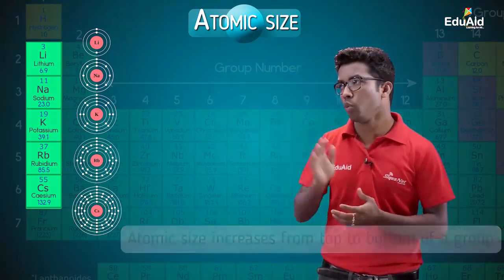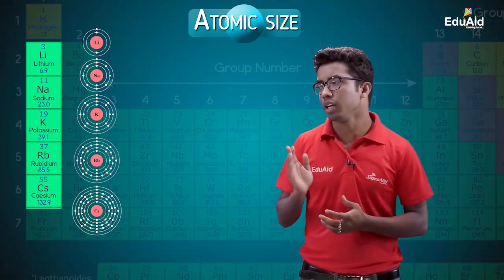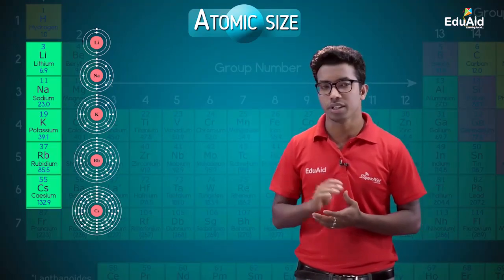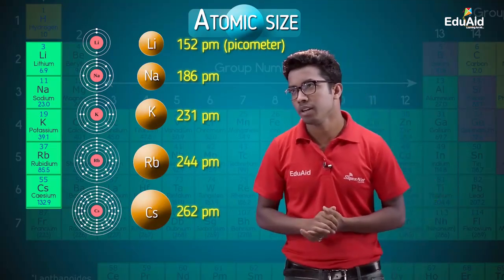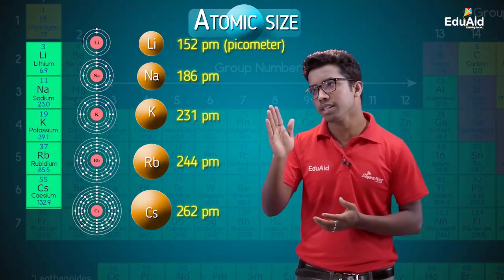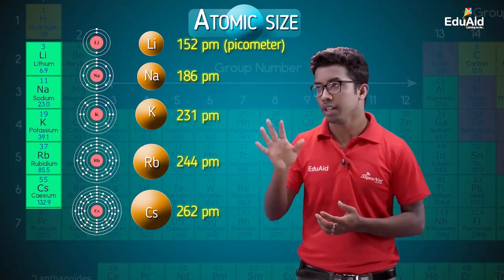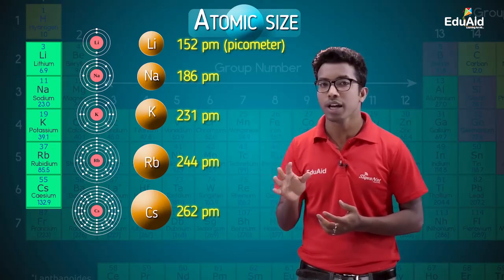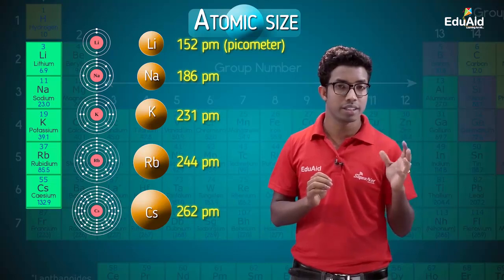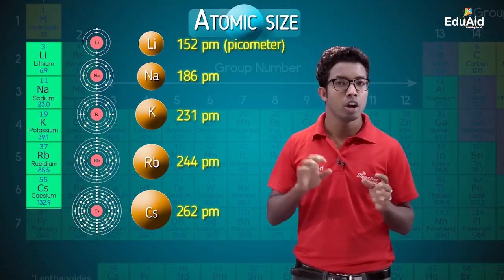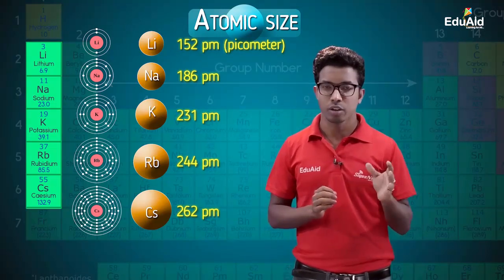Let us look at some atoms from group one: lithium, sodium, potassium, rubidium, cesium. Looking at their atomic sizes, the numbers increase from top to bottom. This increase in size is due to the increasing distance of the outermost electron from the nucleus throughout a group — confirming the trend.